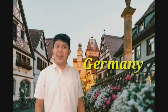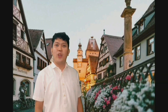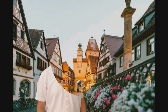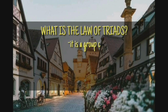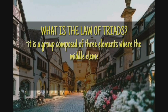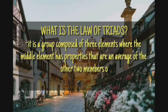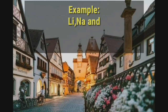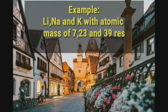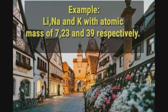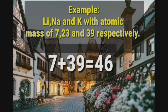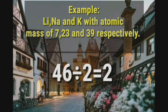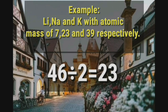Now we're here in Germany, where the famous chemist Johann Dobereiner proposed the Law of Triads. The Law of Triads is a group composed of three elements where the middle element has properties that are an average of the other two members of the triad when ordered by atomic mass. For example, lithium, sodium, and potassium have atomic masses of 7, 23, and 39 respectively. You add the first and the third element — 7 plus 39 equals 46 — and divide by 2 to get 23, which is the same atomic mass of the middle element, sodium.